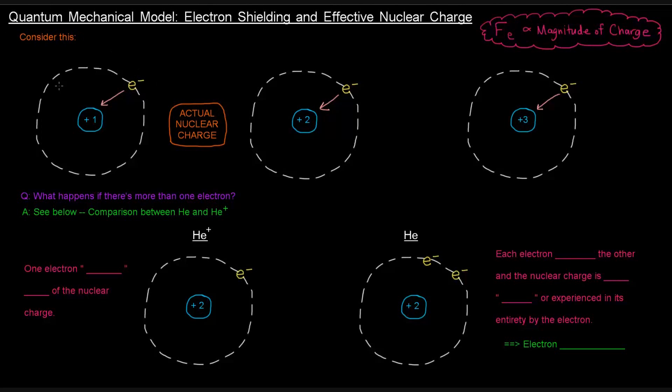So the difference between these three situations is really their nuclear charge, more specifically their actual nuclear charge. The actual nuclear charge of the first is plus one, the second is plus two, and the third is plus three.